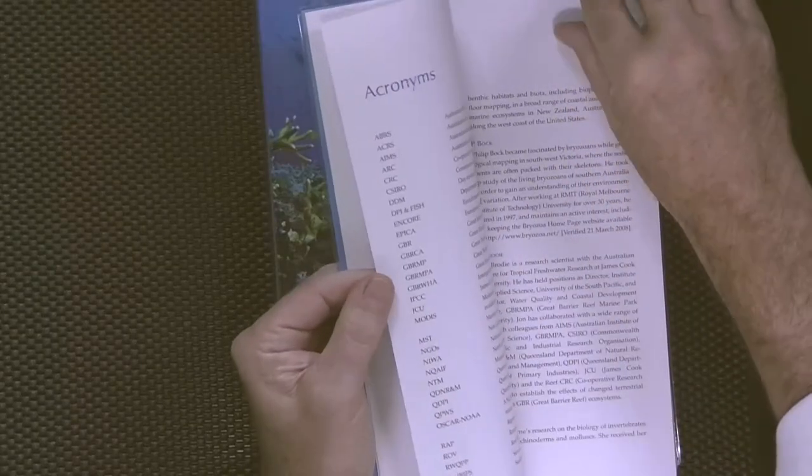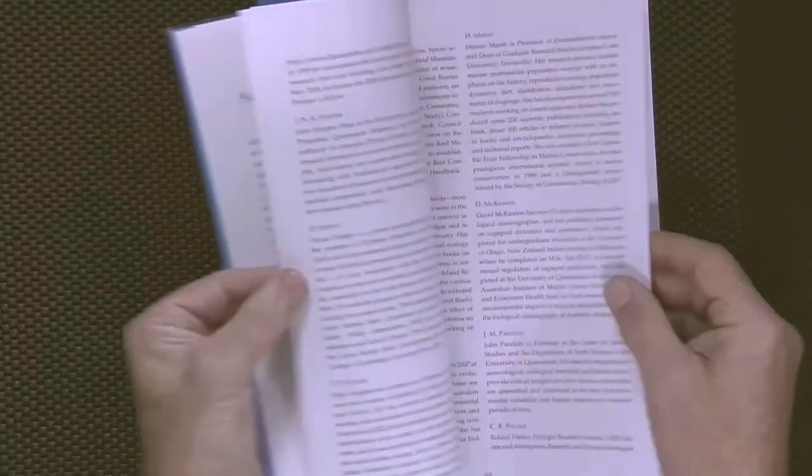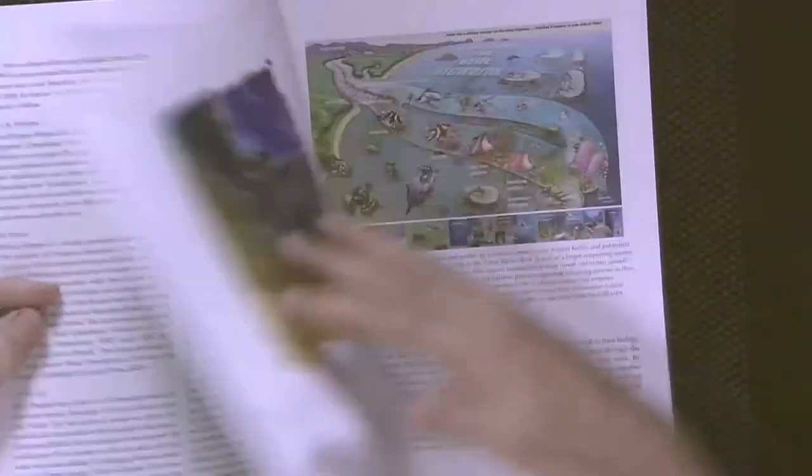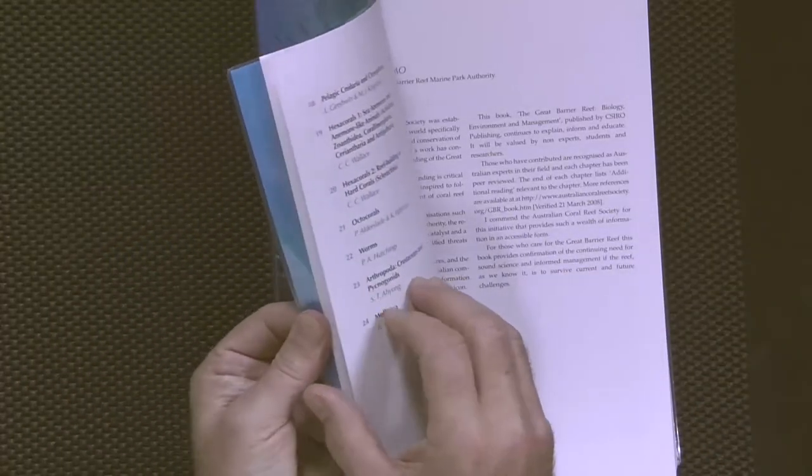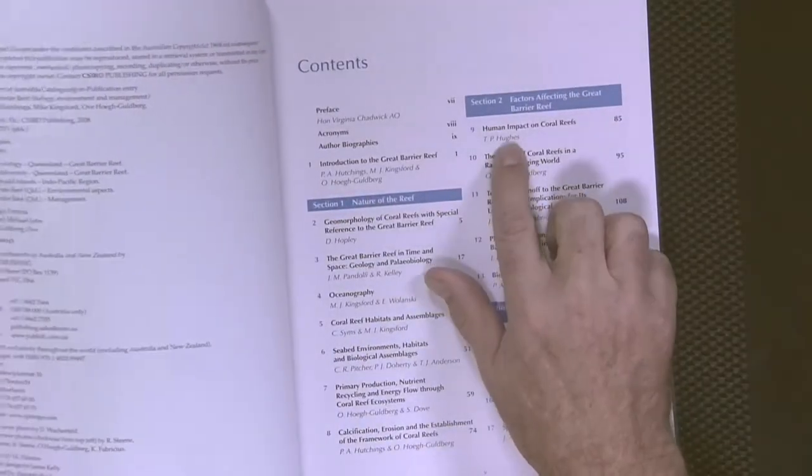There are three important chapters which I would recommend that you have a look at in preparation for this week. The first of these is written by Professor Terry Hughes from James Cook University and in this chapter Professor Hughes explores the full range of impacts on coral reefs.